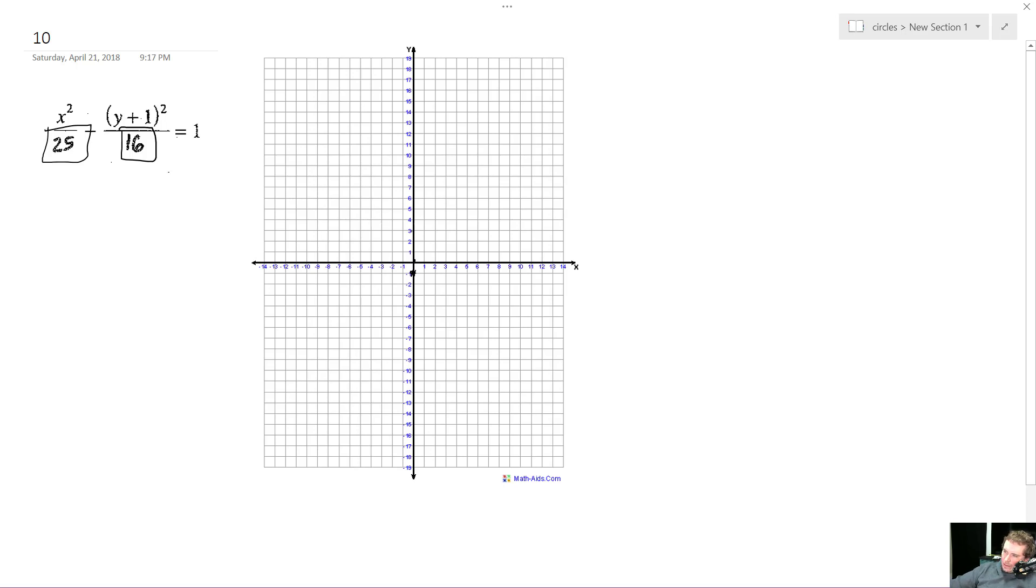So drawing our box, right here, and then down here. So 4 spaces from the center for each direction, and then with regards to x, it's going to be a direction of 5, so here and here, and then we just kind of draw our box.